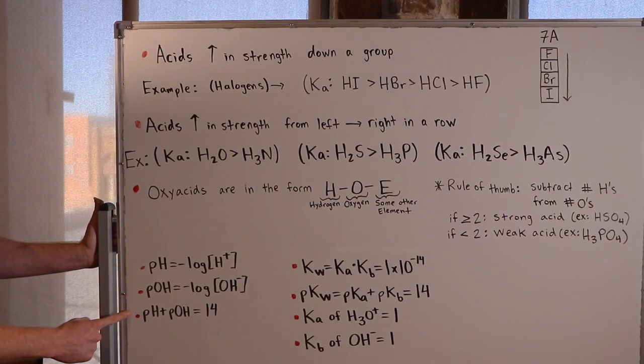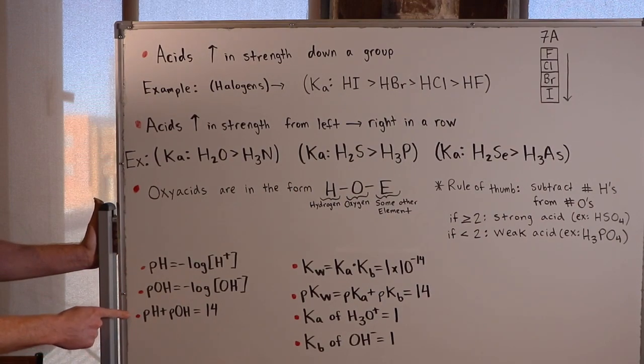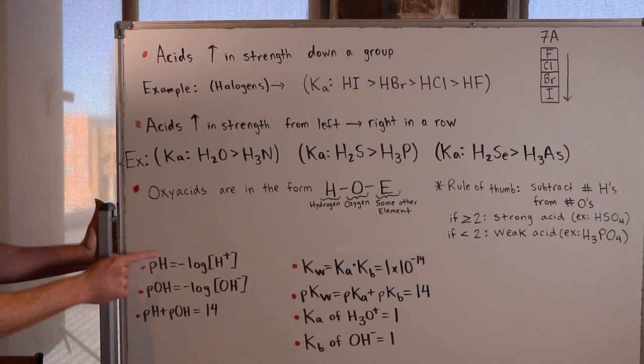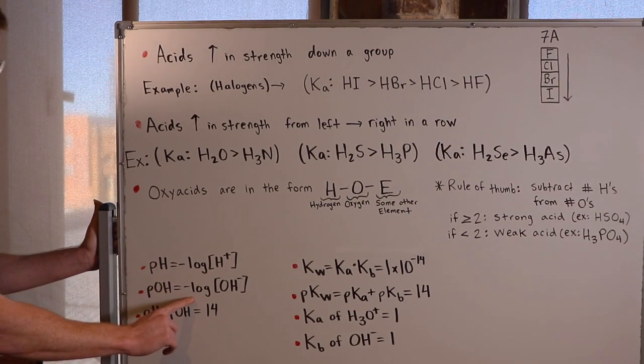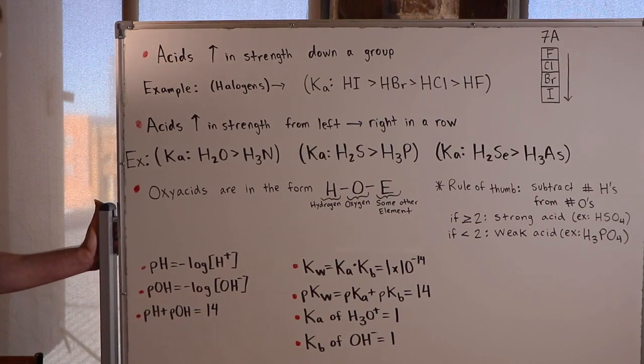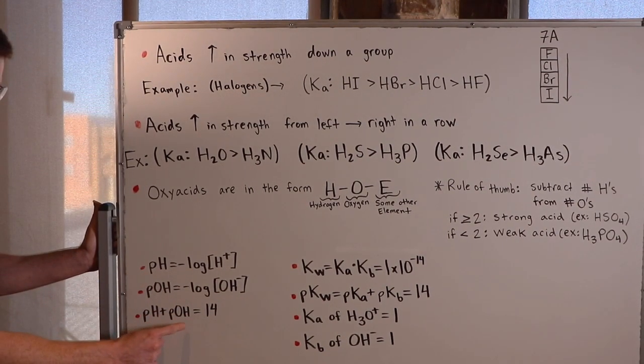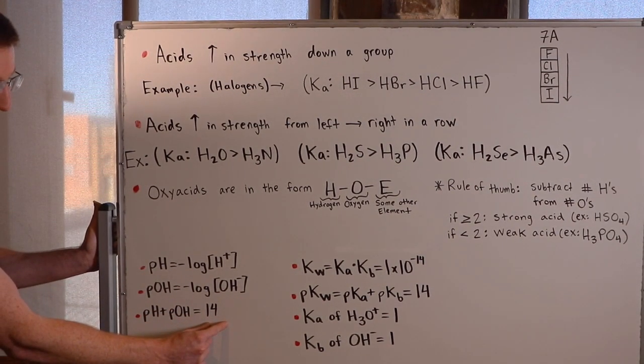Finally, I have some good equations and values to memorize down here. pH is equal to the negative log of the H+ concentration, while pOH is equal to the negative log of the hydroxide concentration. Add pH and pOH together, and you'll always get 14.